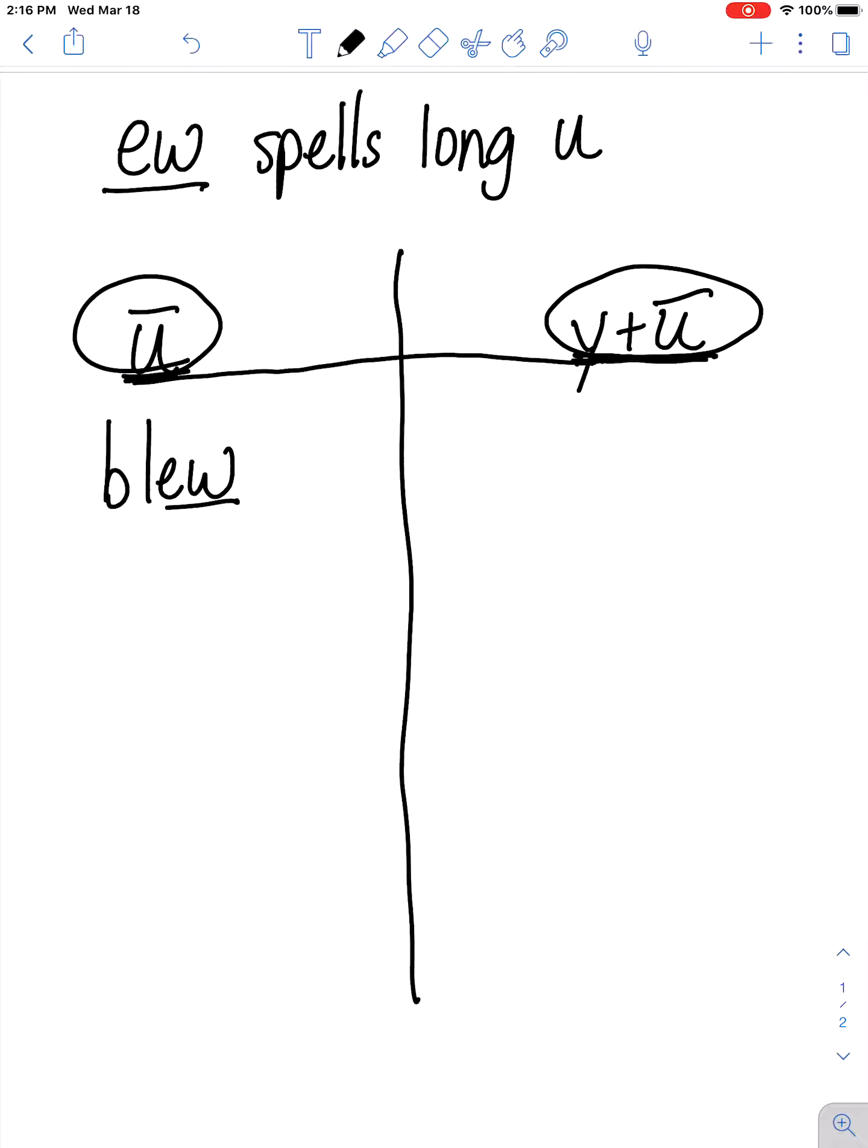Another example would be chew. Will you please chew quietly? EW again in this word is saying ooh, that basic long u sound. Another example is stew. When will this stew be ready? Spelled EW.